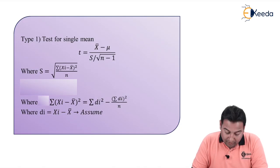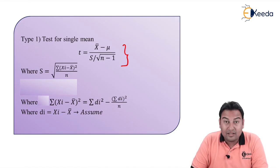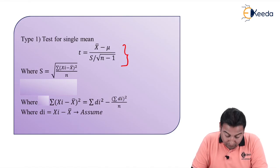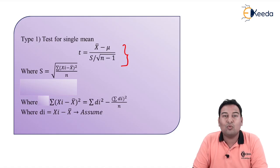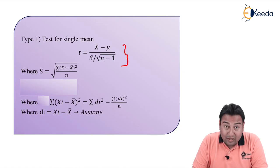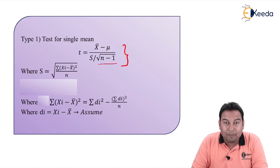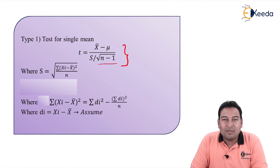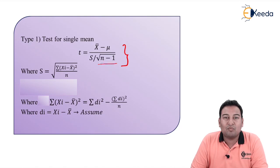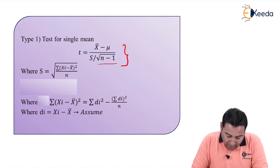For test of single mean, this is the formula. If you observe this formula, it is quite similar to large sample test. The only difference is n minus 1. In large sample test, the denominator has n, and in small sample test, it is n minus 1.